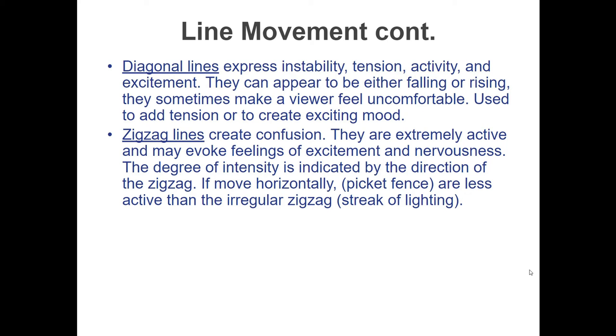If it's moving horizontally, one example would be a picket fence—a straight line with slight zigzags. A regular zigzag going in all different directions would be a streak of lightning.